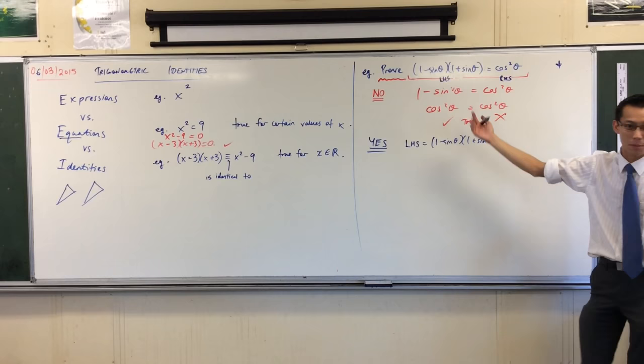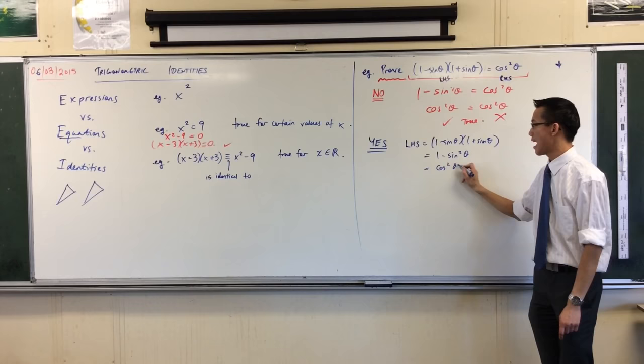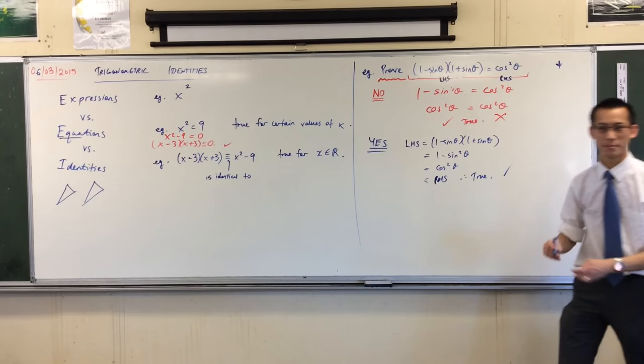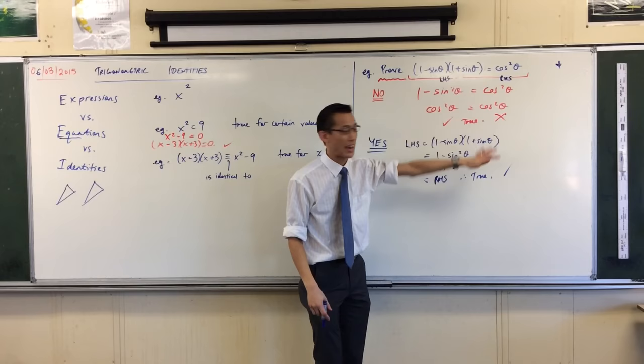And then I'm going to start working on it. Now because it's so simple, there's not really many other places I can go. I'm just going to expand. That's cos squared. And now I'm going to say, aha, now I have arrived at what I was supposed to arrive at, the other side. Right hand side. Therefore, it's true. Done. So this, mathematically, it's all the same. But the way I presented the argument is very different.